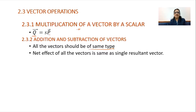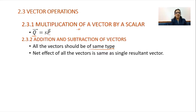The resultant vector is a single vector which produces the same effect as that of the combined effect produced by all those vectors together. So when we add or subtract two or more vectors, the resultant vector we get has the net effect of all those vectors which are added together.